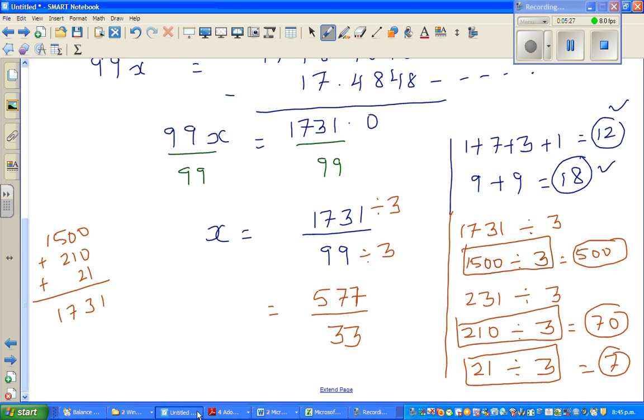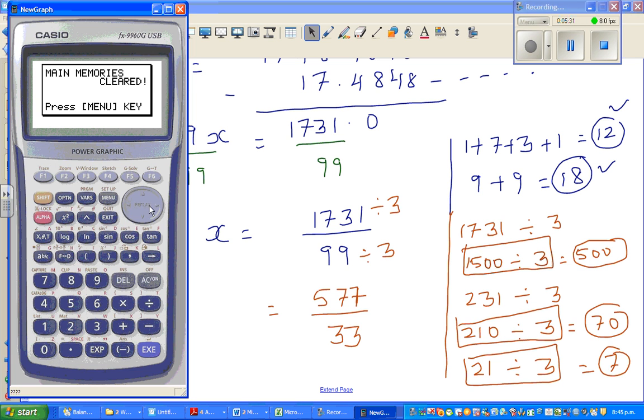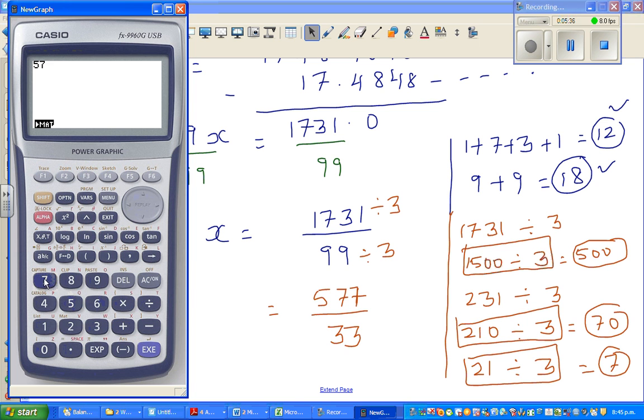Now just to show this on a calculator, where's my calculator? So this is menu run. 577. So let's do 577 divided by 3. 577 divided by 33. Sorry. 577 divided by 33, not 3. So here's the number 17.484848.